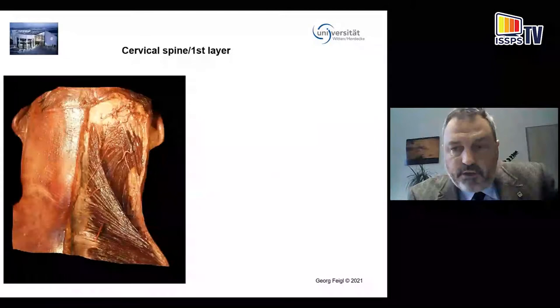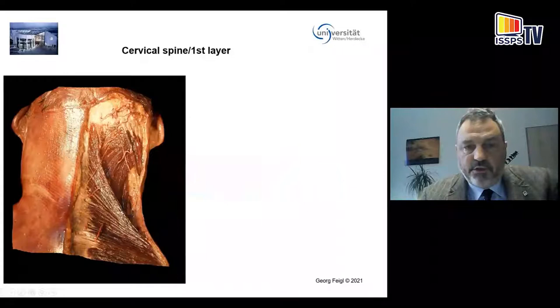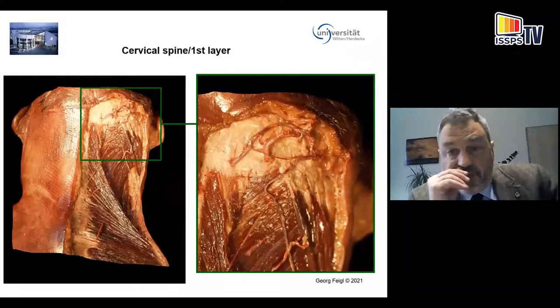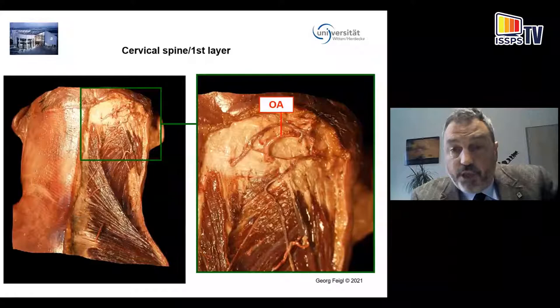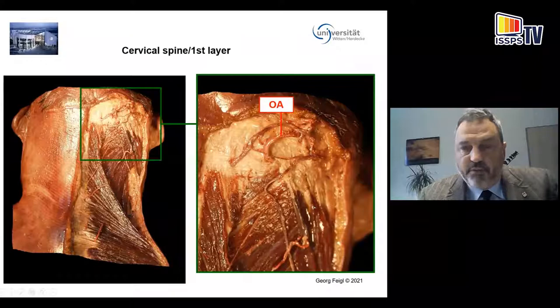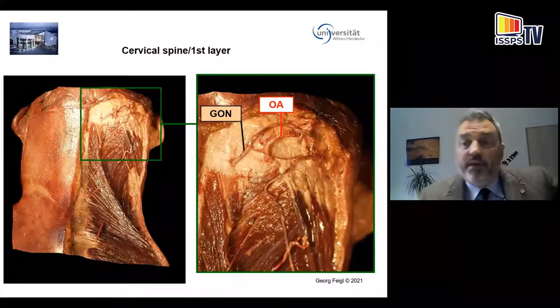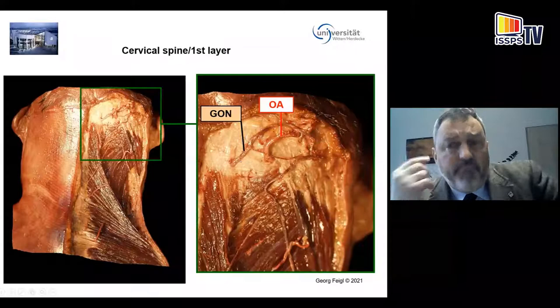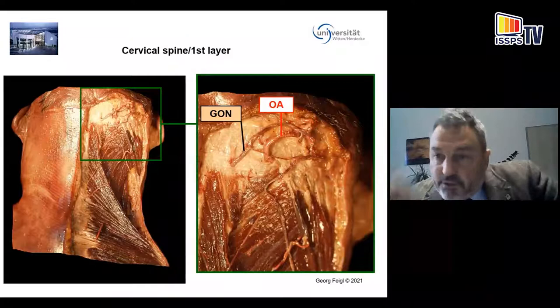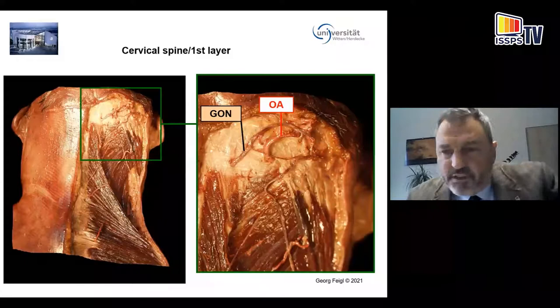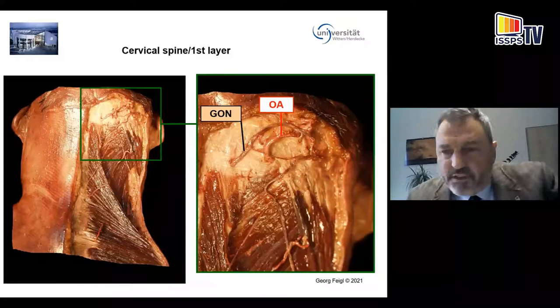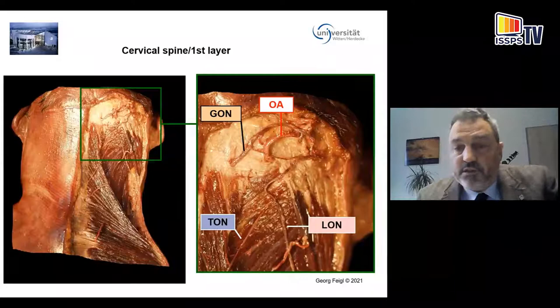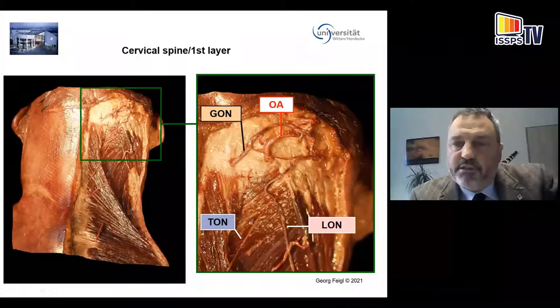Now let's look at dissections. You can see the first layer with the trapezius muscle and the sternocleidomastoid, then the splenius capitis underneath, and then the nerve fibers in this area. The occipital artery reaches the occipital area, turning around and covered by the sternocleidomastoid muscle. Then you get the greater occipital nerve running obliquely from medial to lateral — you can make visible the obliquus capitis inferior muscle, but the nerve turns around very laterally. The splenius capitis with the lesser occipital and third occipital nerve, and the lesser occipital nerve has a close relation to the dorsal margin of the sternocleidomastoid.